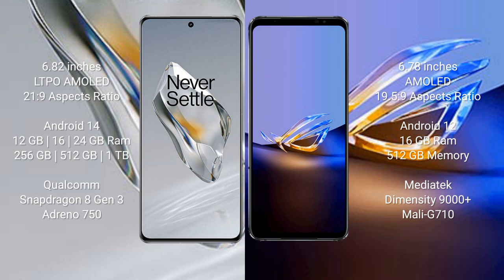The OnePlus 12 runs on the Android 14 operating system, while the ASUS ROG Phone 6D Ultimate runs on Android 12. The OnePlus 12 comes with 12GB, 16GB, or 24GB RAM and 256GB or 512GB internal storage, powered by the Qualcomm Snapdragon 8 Gen 3 processor with Adreno 750 GPU.